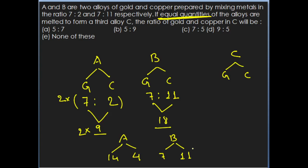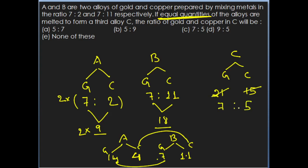On mixing them together: total gold is 14 plus 7 which is 21, and total copper is 4 plus 11 which is 15. In terms of ratio, cancel by 3: 3 sevens are 21 and 3 fives are 15. So gold and copper are in the ratio 7 is to 5 in alloy C.